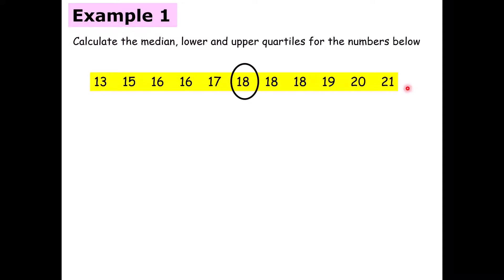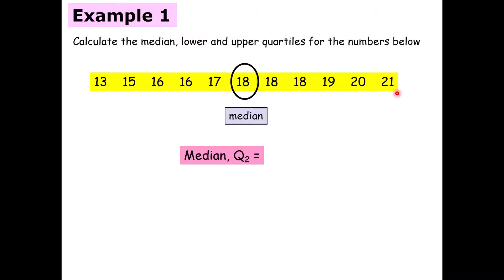First we're going to find the median, which is the middle number within a set of numbers. If we count our numbers: 1, 2, 3, 4, 5, 6, 7, 8, 9, 10, 11 — that's an odd number, which means the middle number is our median. It gives us five numbers on each side, so 18 is our median. We'll call that Q2 — the second quartile — which is 18.